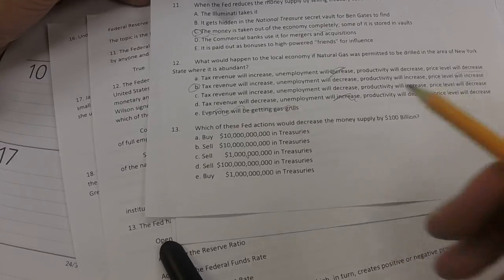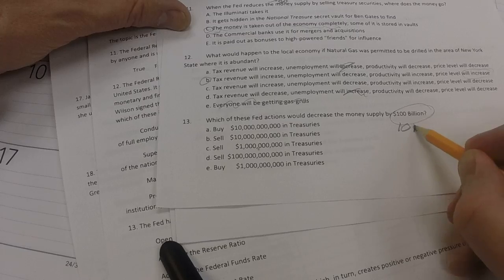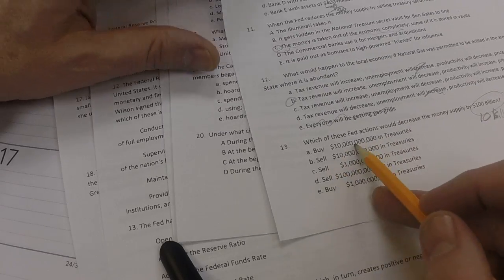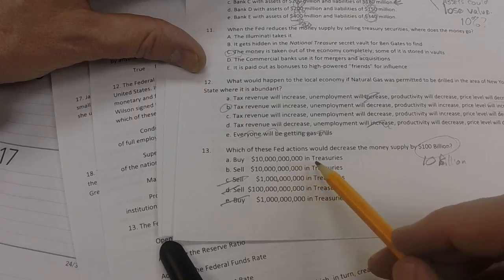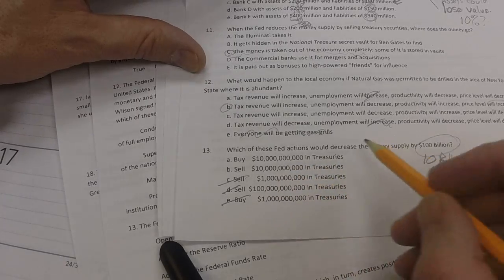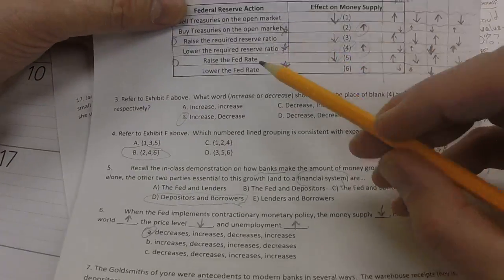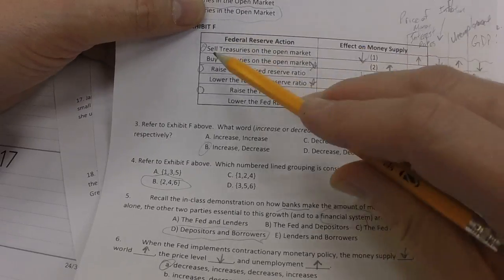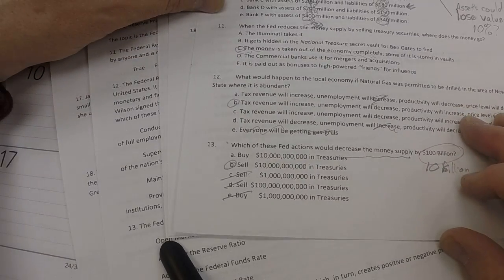Question 13. Which of these Fed actions would decrease the money supply by $100 billion? Well, here, what we're looking for is a change in amount of only $10 billion because of the multiplier effect. So, $10 billion, $10 billion. It's not going to be that one. It's not going to be that one. It's not going to be that one. So, it's either buy $10 billion in treasuries or sell $10 billion in treasuries. And since we want to decrease the money supply, we go back to our chart and we see that when we sell or buy treasuries, the one that's going to decrease the money supply is selling treasuries. So, we'll go back to here. And selling $10 billion in treasuries is the correct answer for number 13.